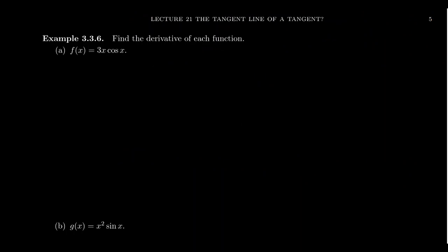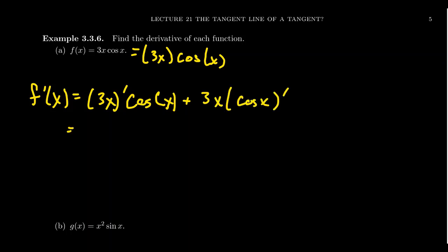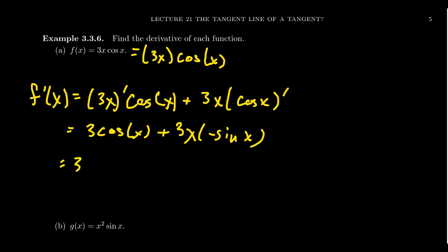Let's put this to practical use. We can compute derivatives involving sines and cosines. For example, suppose f of x equals 3x cosine of x. We treat this as a product of 3x and cosine of x and apply the product rule: the derivative of 3x times cosine of x, plus 3x times the derivative of cosine of x. The derivative of 3x is 3, and the derivative of cosine is negative sine, giving us 3 cosine of x minus 3x sine of x.